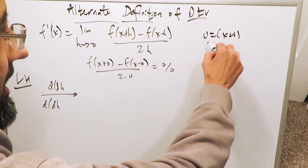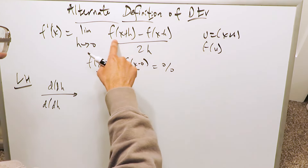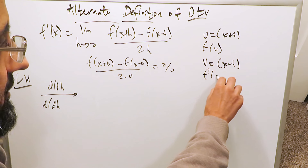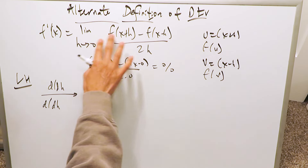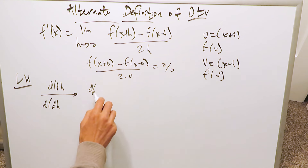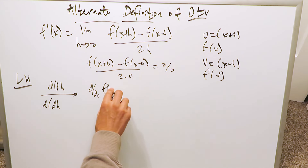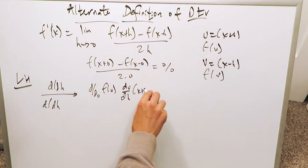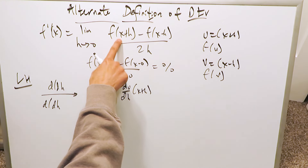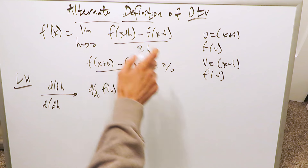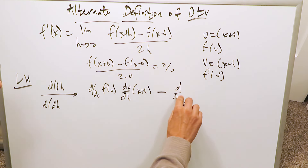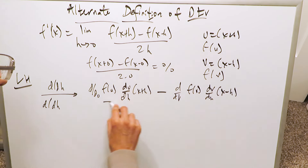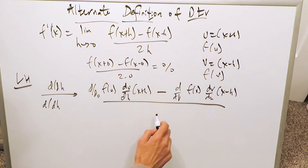You can do a substitution: u is equal to x plus h, giving you a function with regards to u to capture that part. Then v is equal to x minus h, since this is indeed a composite function, giving you a function with regards to v. For the numerator, you'll have the derivative with respect to u of f of u, times du over dh of x plus h. For the second part, you'll have d over dv of f of v, times dv over dh of x minus h. The derivative of the denominator 2h is simply 2.